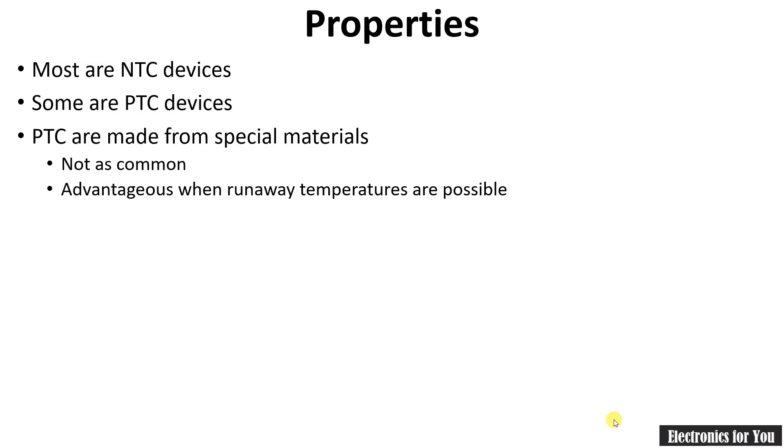Now let's see some properties of thermistor. These are very important because they will be helpful in understanding advantages and disadvantages. Generally, thermistors are made up of semiconductor materials, so these are NTC devices. Some thermistors are made up of metal oxide, therefore we can say that they have positive temperature coefficient, so some are PTC devices. PTC devices are not very common and generally they are useful when thermal runaway problems occur.